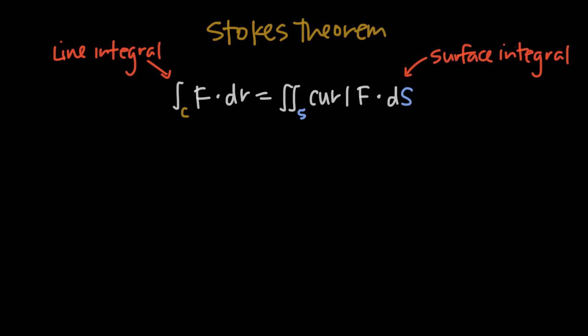You'll recognize the line integral on the left side of the Stokes' Theorem formula — it's the line integral with the vector function r, the vector field f, over the curve c. On the right-hand side, we have a surface integral that includes the curl of the vector field f and the three-dimensional surface s. Now when it comes to the Stokes' Theorem formula, there are a couple of things we need to define.